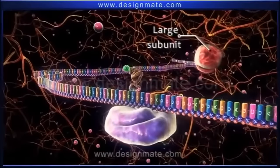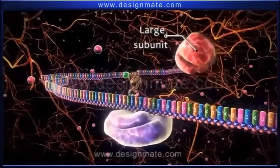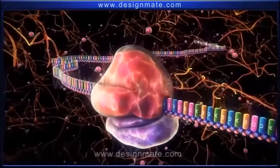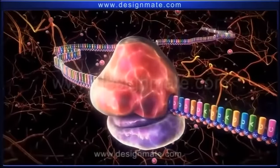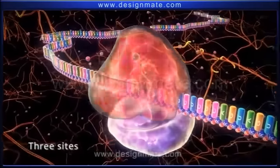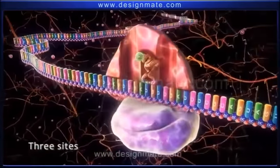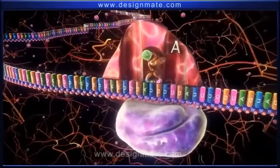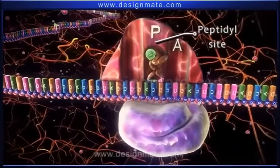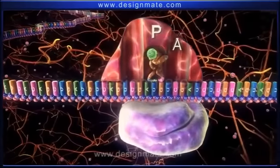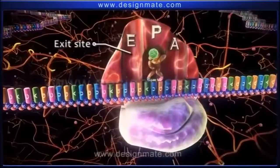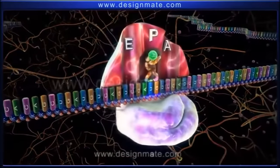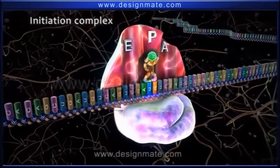Then a large subunit of the ribosome combines with the small ribosomal subunit. The large subunit shows three sites: the acceptor site or A site, the peptidyl site or P site, and the exit site or E site. This whole unit forms the initiation complex.